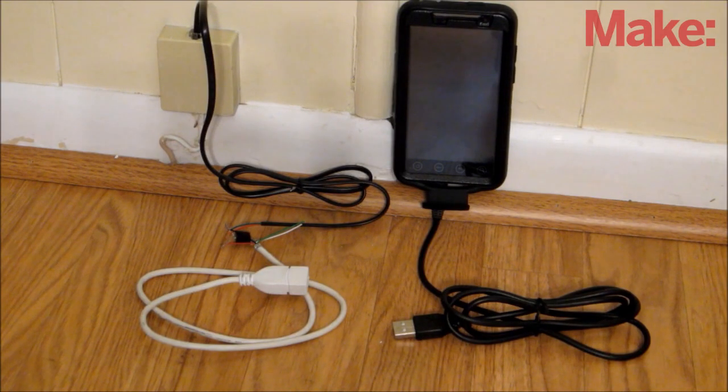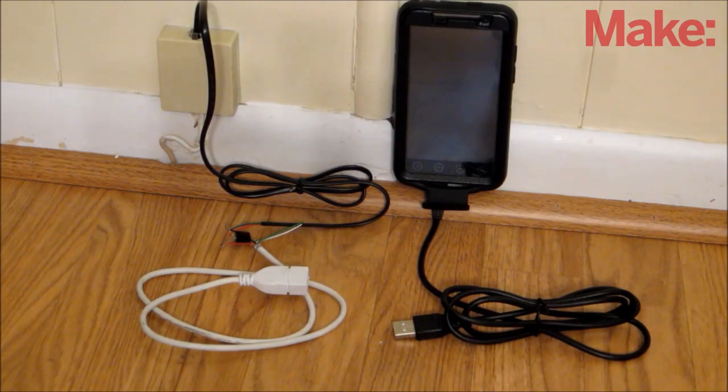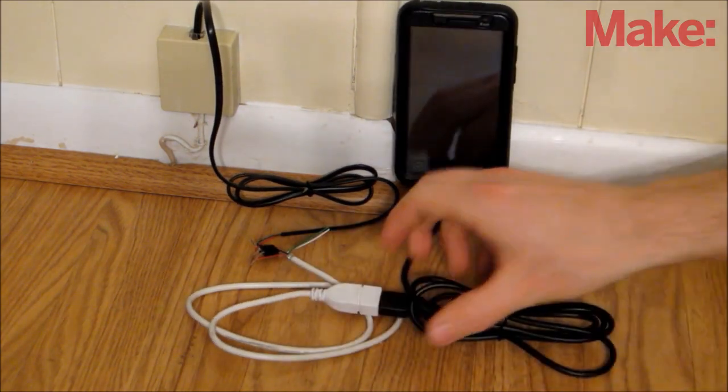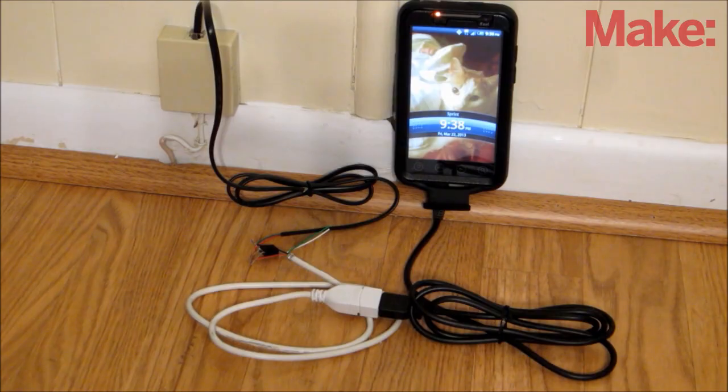Once all your wires are connected, plug the phone cord into the nearest phone jack, and then plug your phone and charging cable into the USB cable. Your phone should begin to charge, and in a few minutes, you should have enough power to make a phone call.